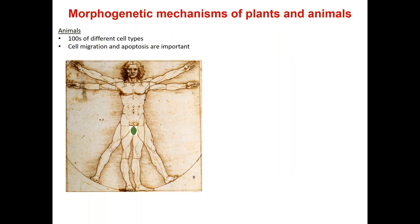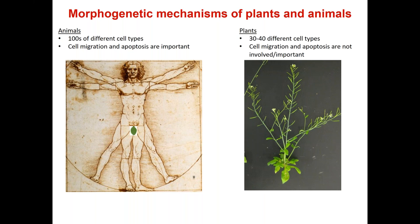Just to lay the stage for how morphogenetic mechanisms differ between plants and animals: in our bodies, we have hundreds of different cell types, each specialized for different functions with different shapes. Cell migration as well as programmed cell death or apoptosis is really important for forming our body plan and the shapes of organs.